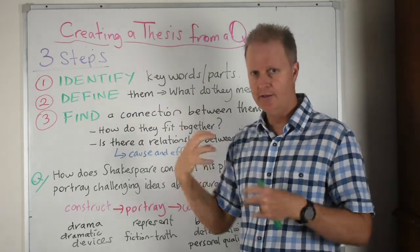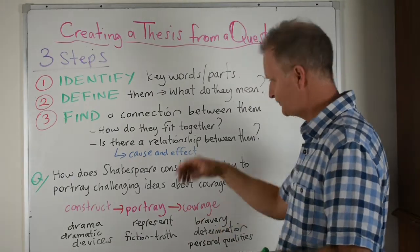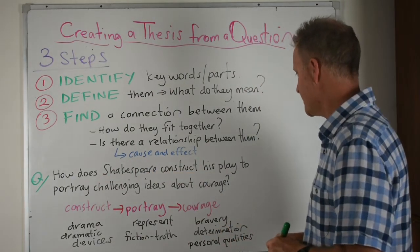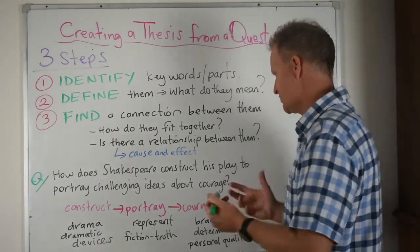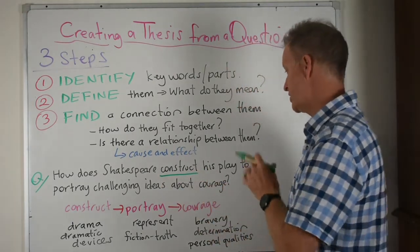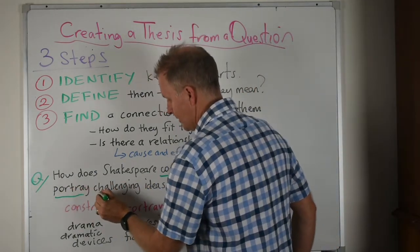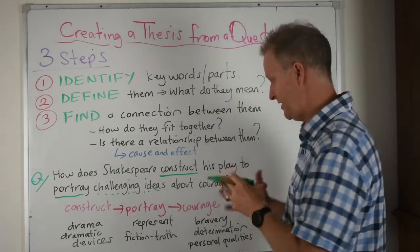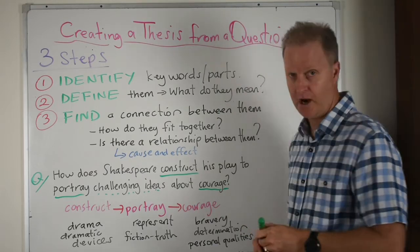Once you've done that, you can start looking at how to build that response. We've got a practice question here: 'How does Shakespeare construct his play to portray challenging ideas about courage?' The key words for me would be this idea of constructing the play to portray, portraying the challenging ideas, and the third important word is courage.